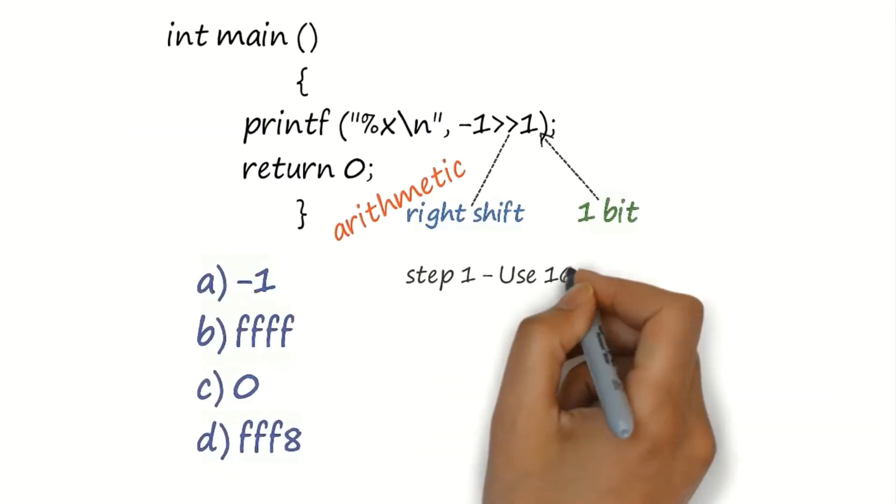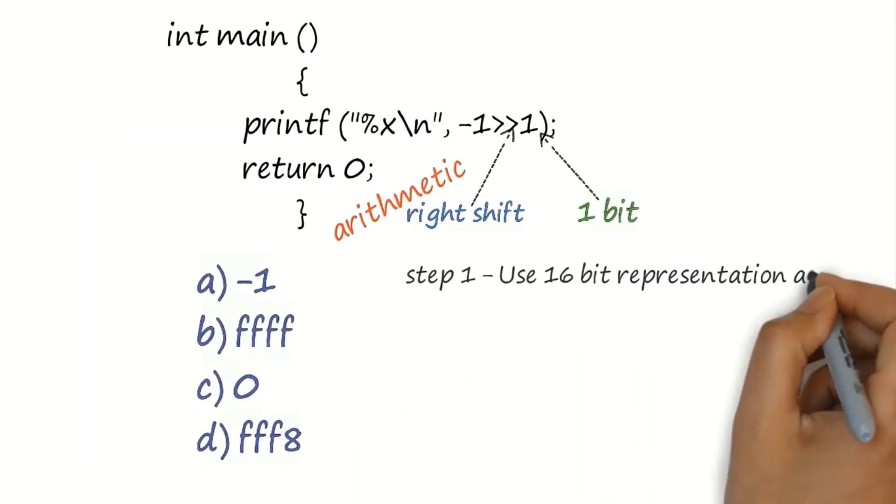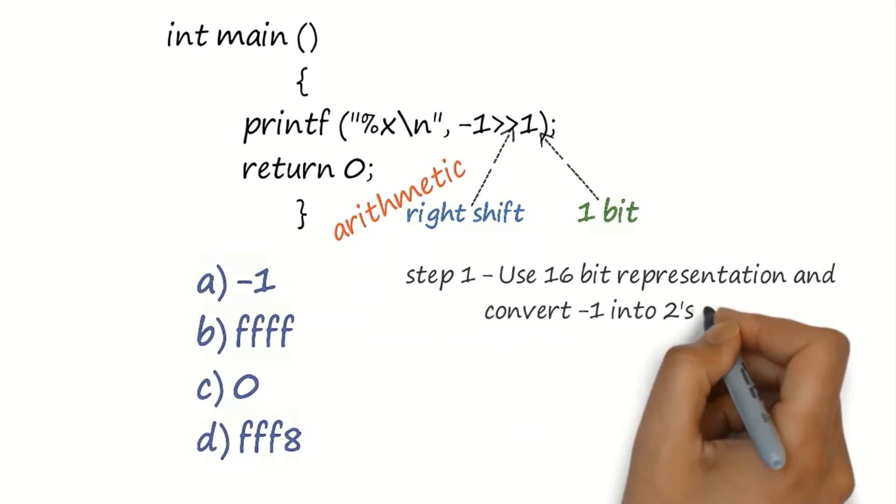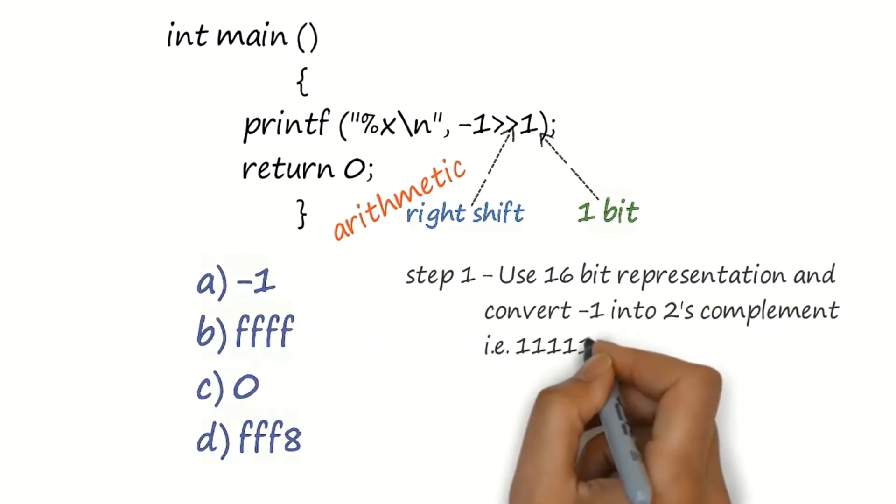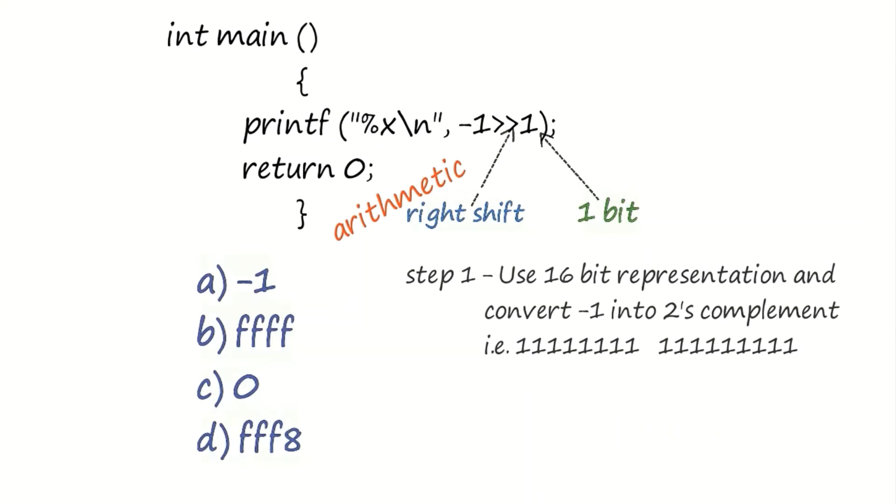While solving the previous problem, I already explained that negative numbers need to be converted to 2's complement. Therefore, minus 1 will be converted to 16-bit 2's complement format.